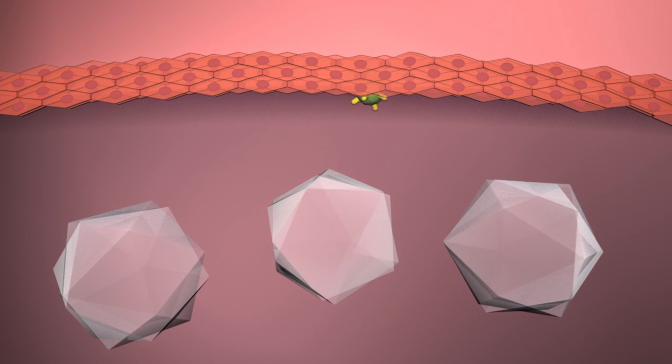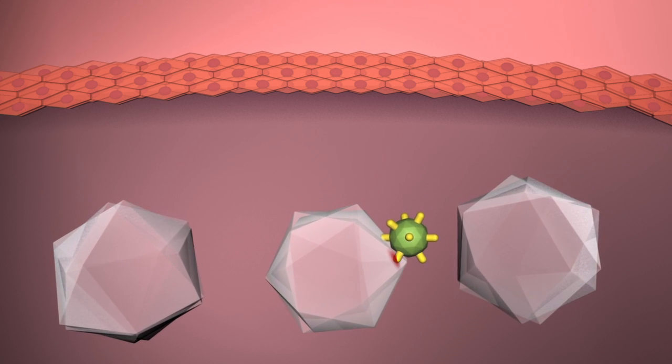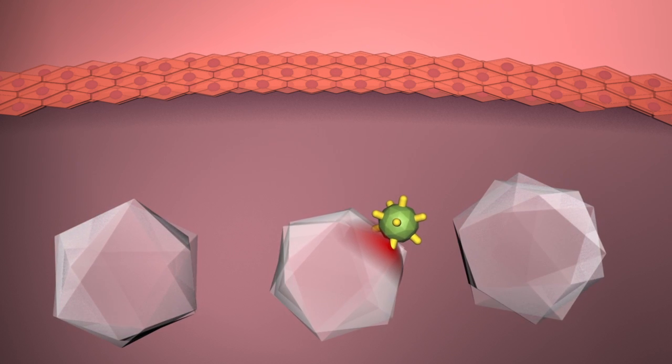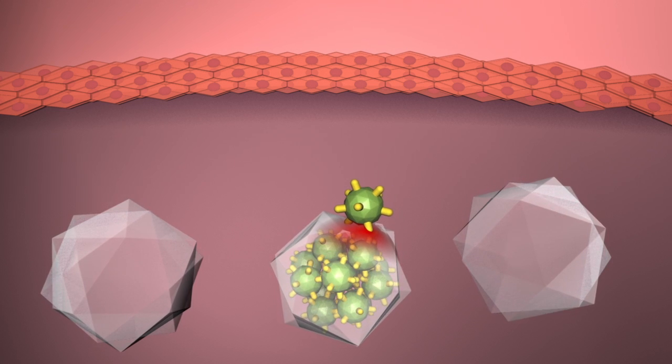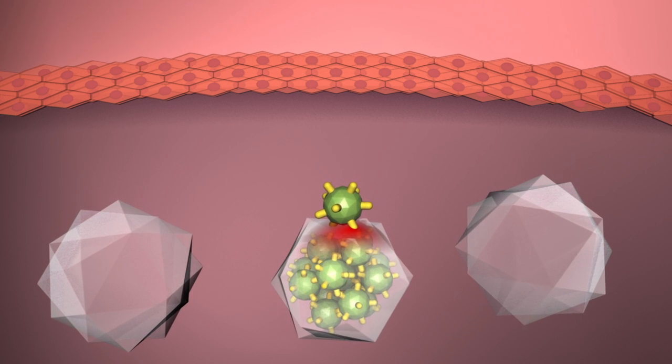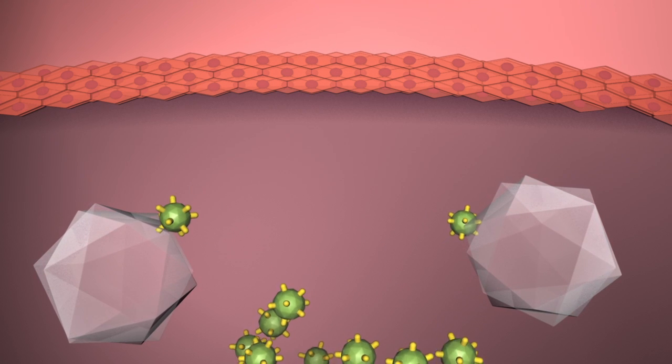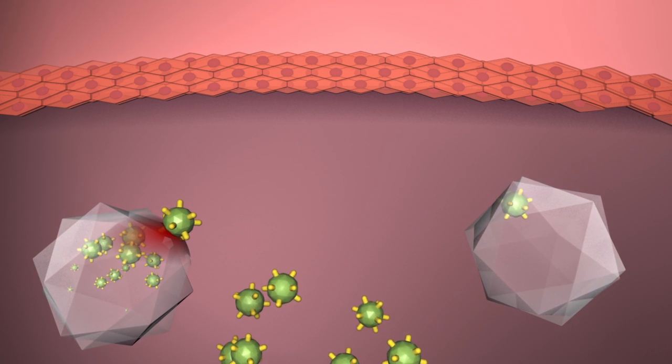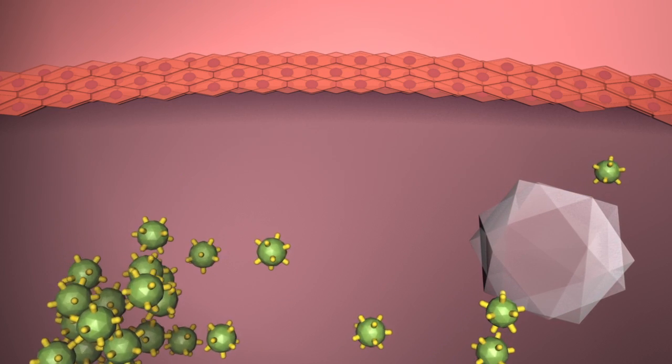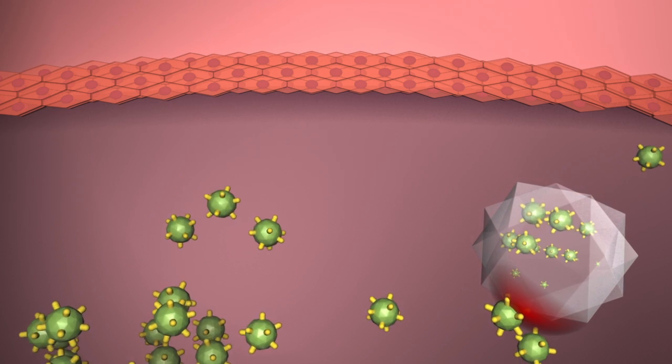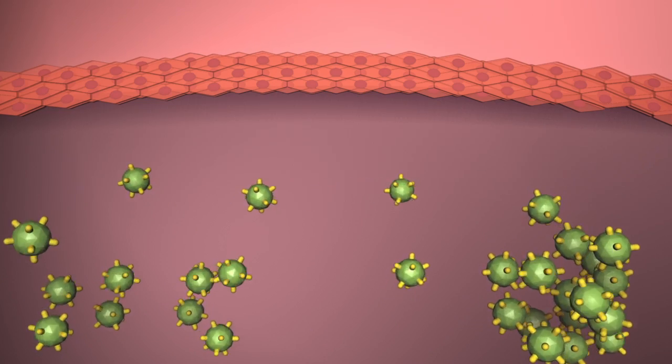But when HIV enters your body, it hunts down these T cells, attacks them, and uses them to make copies of itself at a very high rate, as many as several billion copies per day. These new copies of the virus go out into the body and hunt for even more T cells to take over, using them to make even more copies. The immune system just can't keep up with the virus to stop it from making all those copies. And that results in HIV infection.